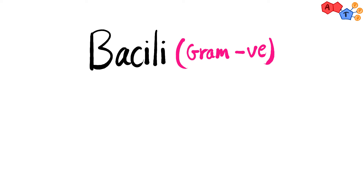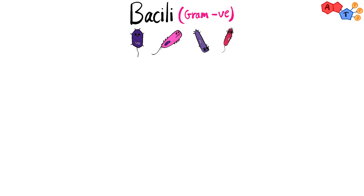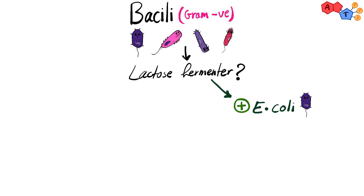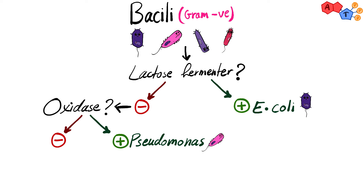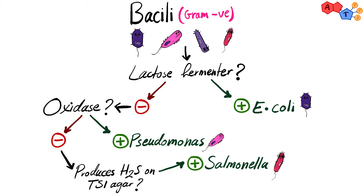Finally, let's put all of this together and understand how to form a diagnostic algorithm. First, we check if the organism is capable of lactose fermentation. If so, we're most likely betting on E. coli. If not, we need to do more tests. Next, we check if the organism is oxidase positive. If so, we're betting on Pseudomonas. If not, we perform one last test: we check if there is any hydrogen sulfide production on TSI agar. If so, it's Salmonella — and keep in mind that the clinical presentation helps in differentiating S. typhi from other Salmonella species. If not, then we're betting on Shigella.